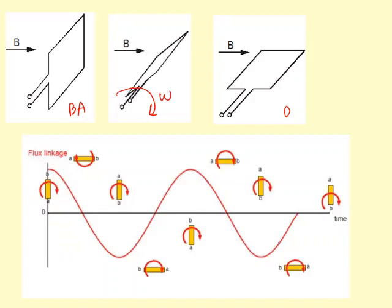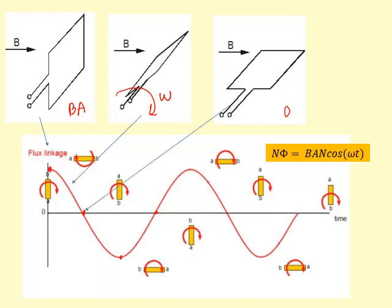You can see flux linkage against time starts off really high, goes to zero, and there's a negative when the flux is basically the other way around — the coil is the other way around — and then it goes back to zero, and it just keeps repeating. The equation for this is: flux linkage equals BANcosωt. That's because θ is equal to the angular velocity times time.